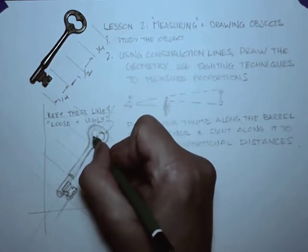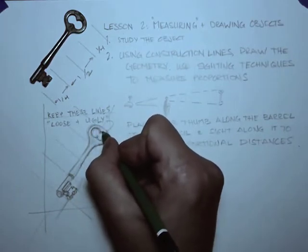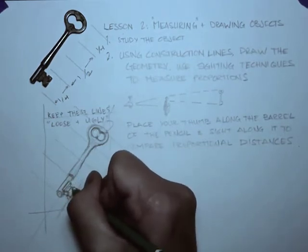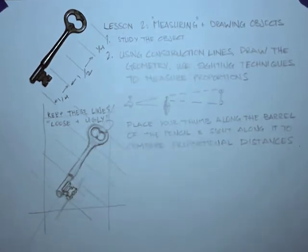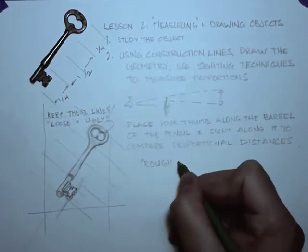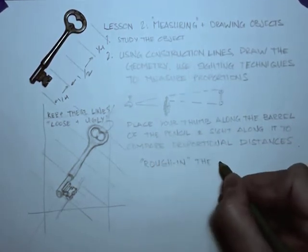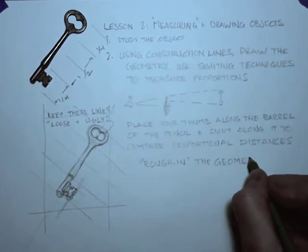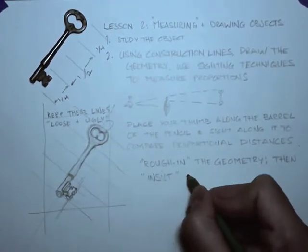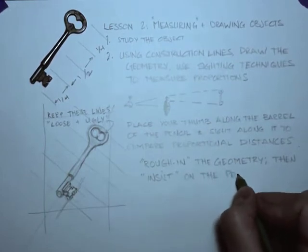I can work back in with an eraser and pull out some of those more hesitant construction lines as I work my way through the object I am drawing. The more complex the object gets, the more diligent we have to be about keeping the page clean and erasing those construction lines as we go. As a rule of thumb, erase them as you need the space that they occupy.